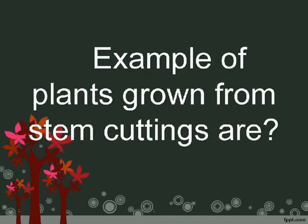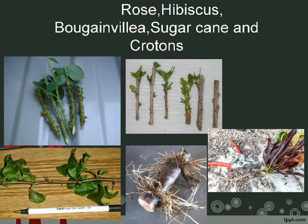Examples of plants grown from stem cuttings are: rose, hibiscus, bougainvillea, sugarcane, and crotons.